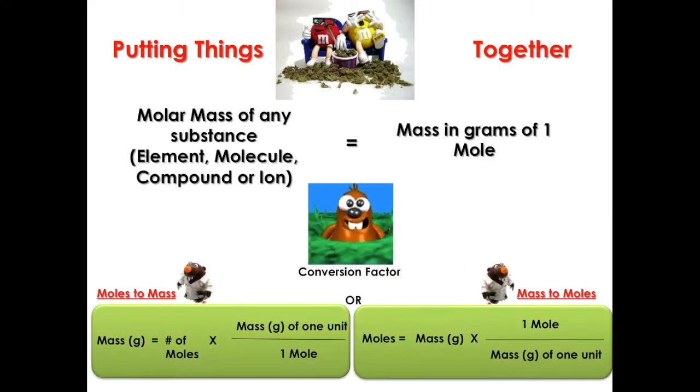In other words, is what we have at the bottom. We can convert moles to mass in grams just by multiplying by a fraction where the moles will go at the bottom and the mass in grams of the unit on top.